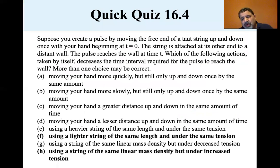So the answer is use a lighter string, mu decreasing, of the same length and under the same tension, or using a string of the same linear mass density but under increased tension. You increase the tension, the velocity will get faster. If you go to a lighter string, the velocity will get faster. Both of those will mean you can get there quicker.